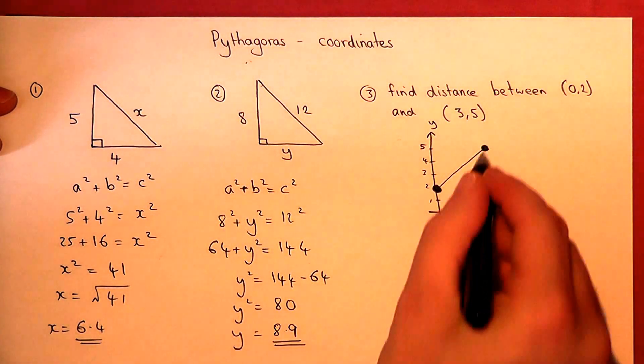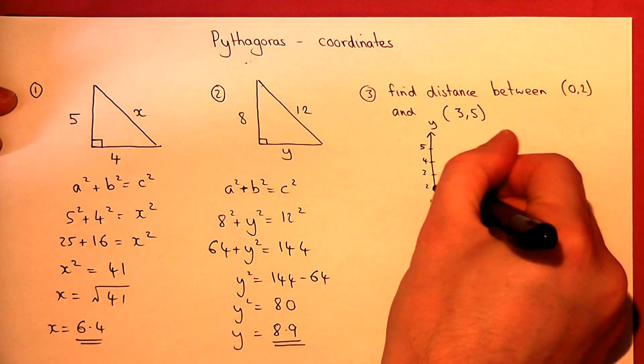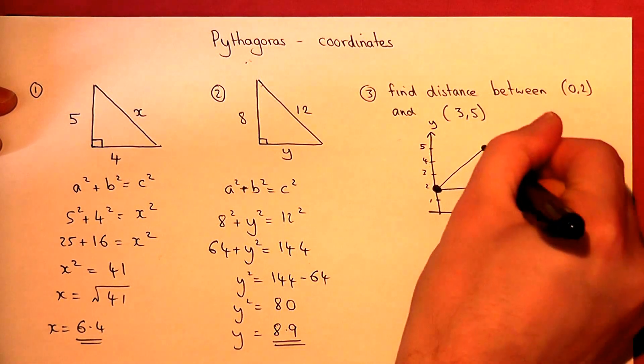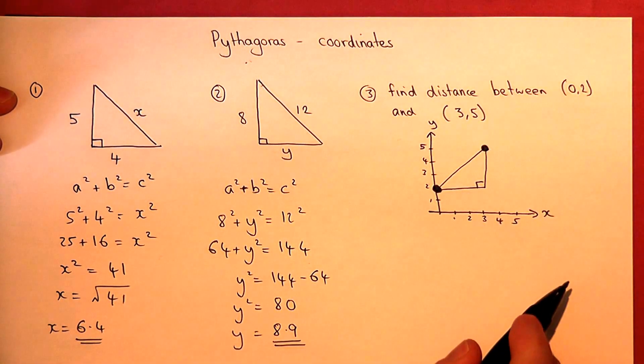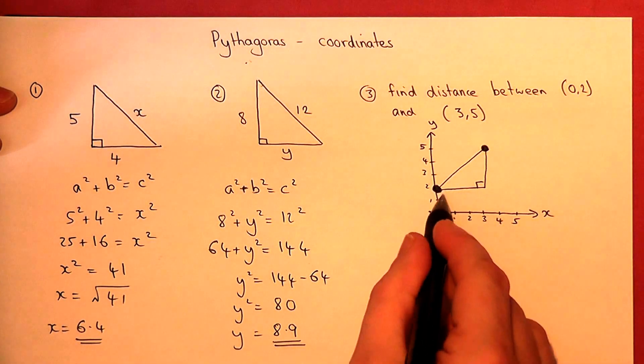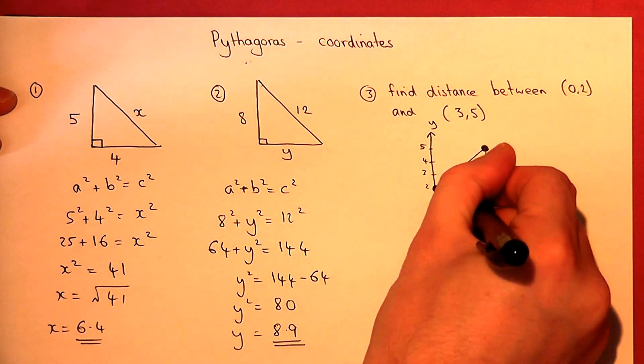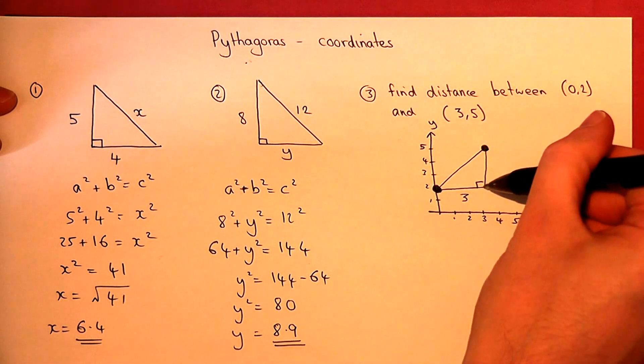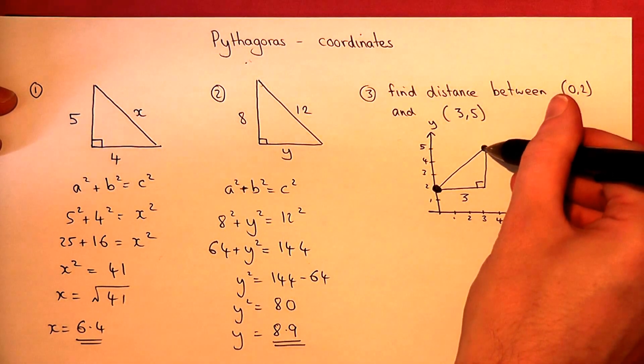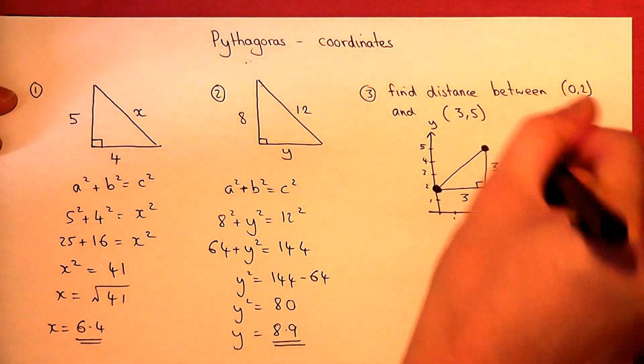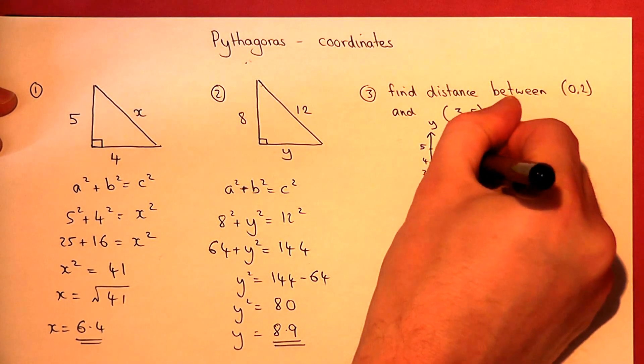The trick here is to see this as a triangle, like so. So that length there is from 0 to 3, it's got a length of 3. This went from 2 to 5, so that side has got a length of 3. And I want the distance, i.e. x.